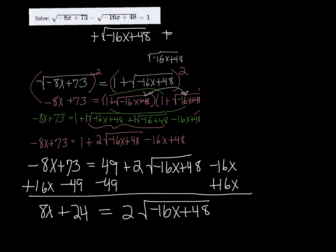We still probably want to get rid of this 2. So we're going to divide both sides by 2. And what we're left with is 4x plus 12. I'm going to divide both sides here equal to the square root of negative 16x plus 48.